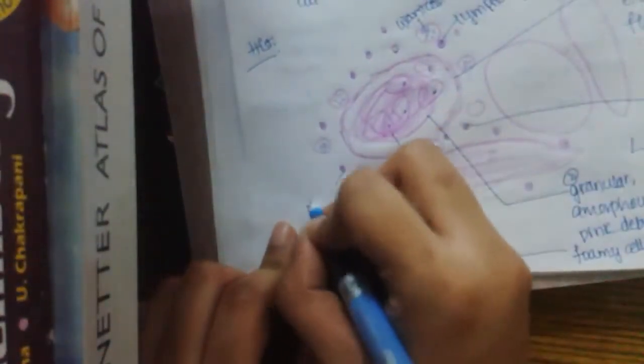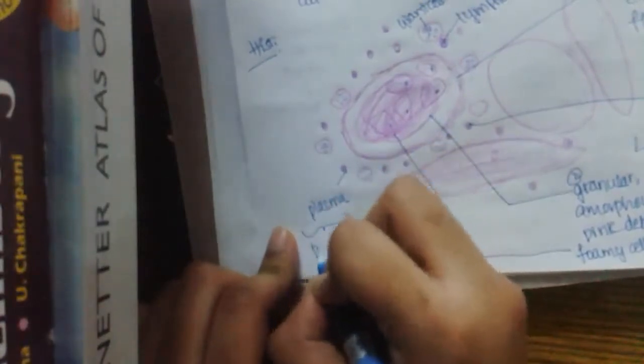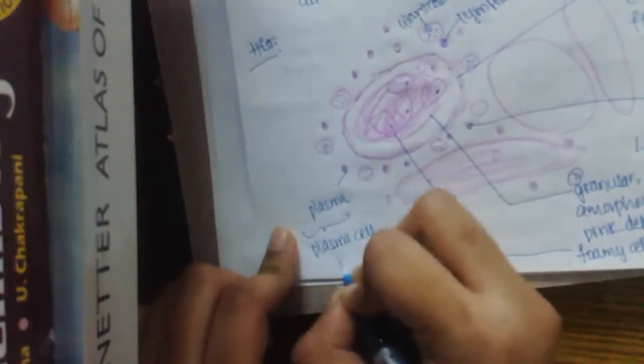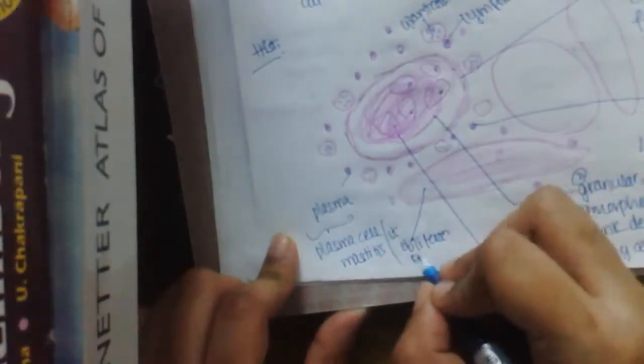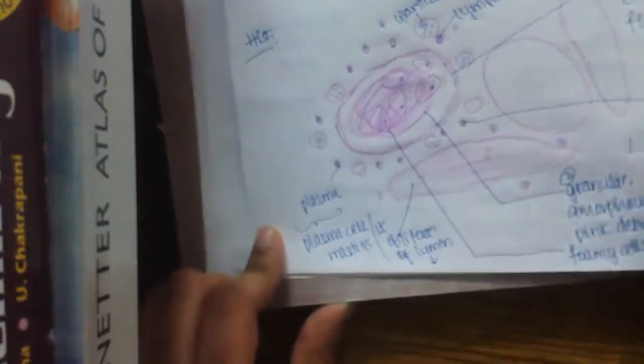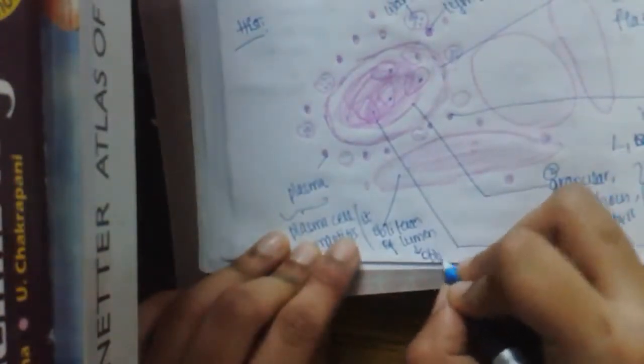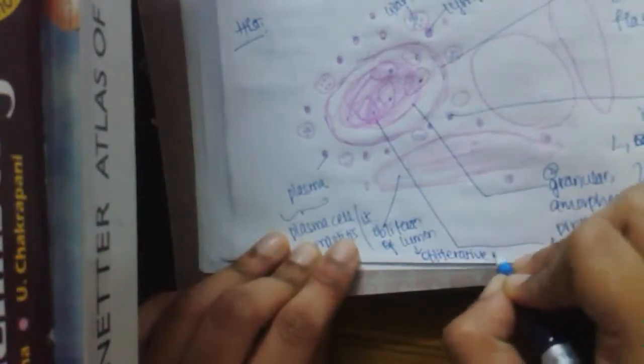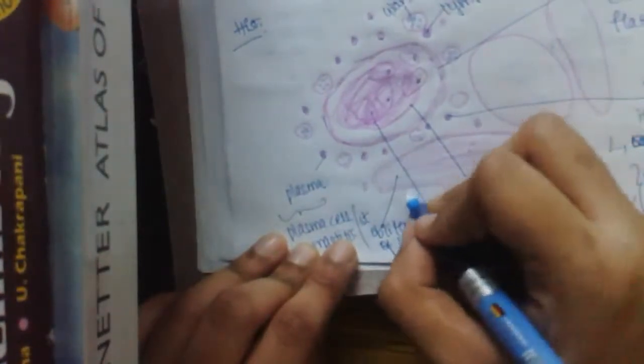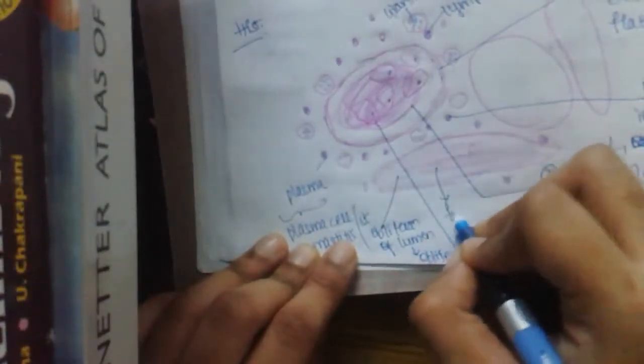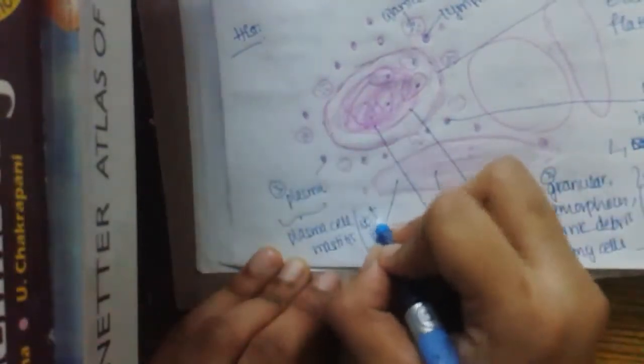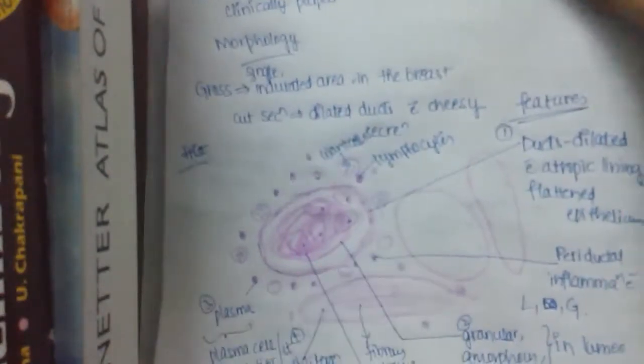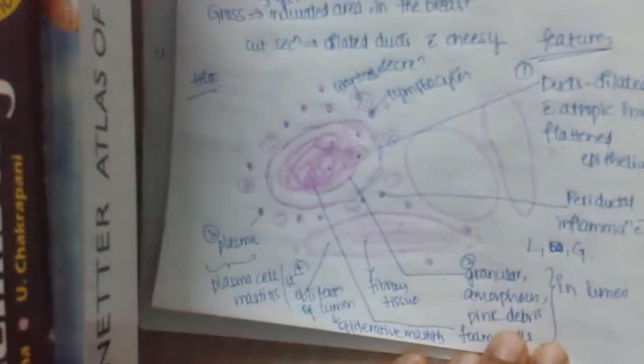So wherever a large number of plasma cells are present, then this is called as plasma cell mastitis. This is the third point and this is the fourth point. So it is important to remember all these features of mammary duct ectasia.